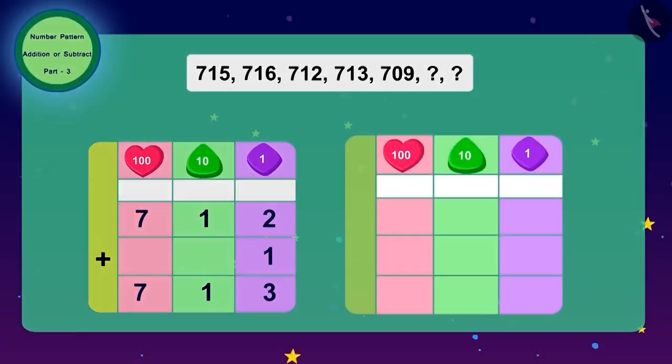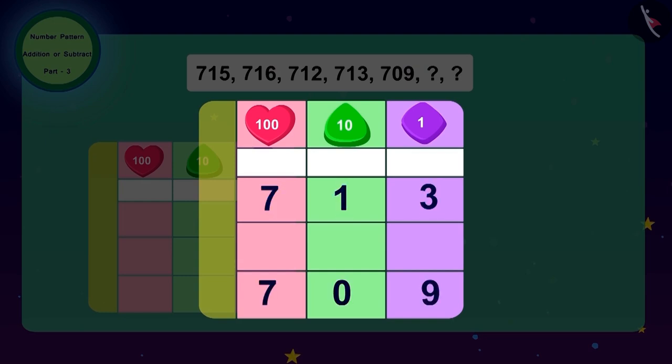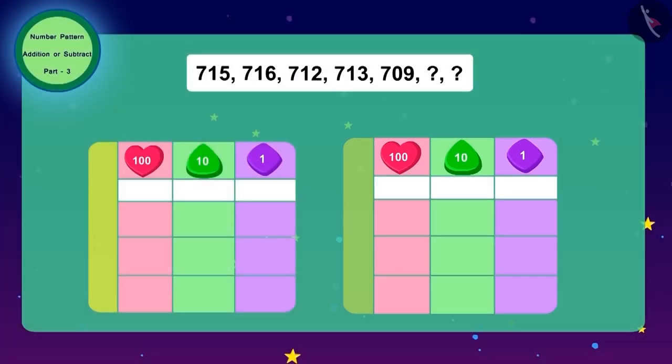And what do we have to do to go from 713 to 709? We will have to subtract four. Likewise, to get the pattern of this code, we will have to first add one and then to get the next number we will have to subtract four.